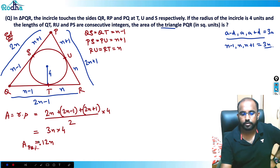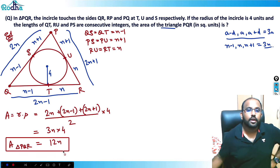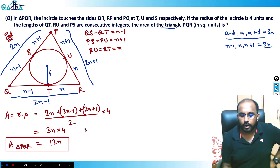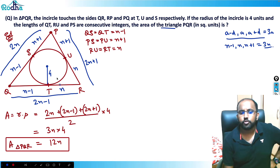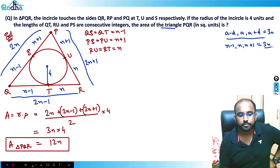The area of any triangle equals r × s. Here r = 4 and s = 3n, so area of triangle PQR = 4 × 3n = 12n. Now I'll also find the area using Heron's formula and equate the two expressions.